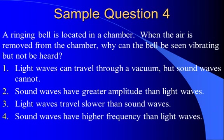A ringing bell is located in a chamber. When the air is removed from the chamber, why can the bell be seen vibrating but not be heard? Well, here we've got to take a look and realize that light that allows us to see the bell can travel through a vacuum. It's an electromagnetic wave.